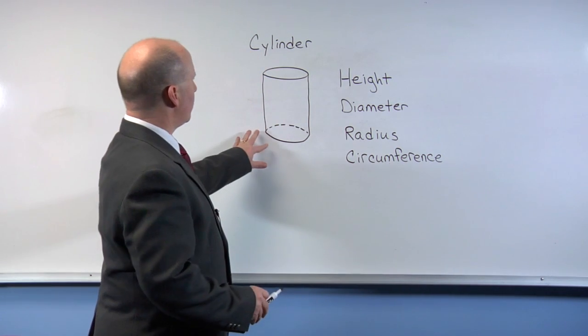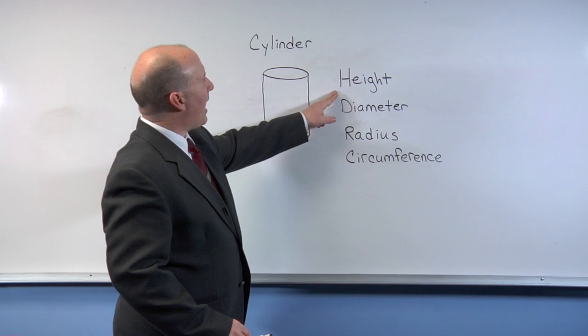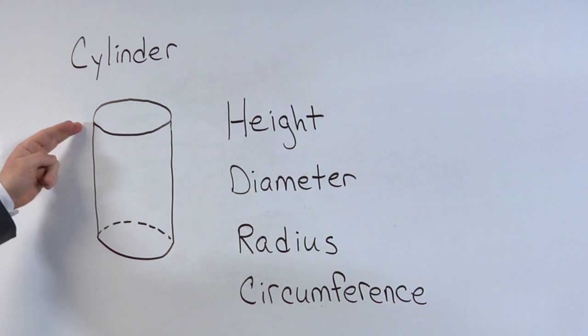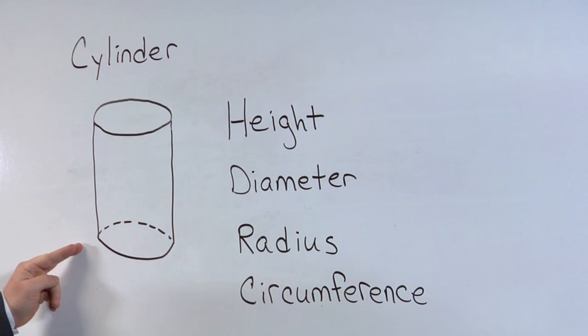Looking at this picture, we talk about the height of a can or of a cylinder as being the height from top to bottom.